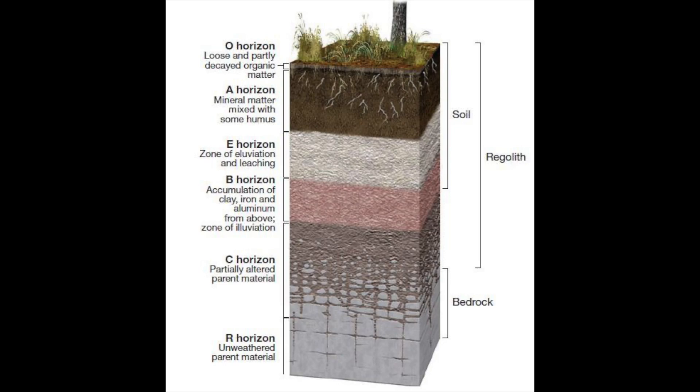We're going to start with the O horizon. In these diagrams it's a very small layer — sometimes only half an inch to an inch deep — even in the most productive and fertile soils on the planet. You might think the Amazon rainforest has the deepest O horizon, but that's actually wrong. It's the prairies in the west, where the O horizon can be as deep as 20 to 30 feet.